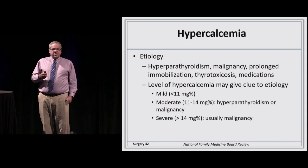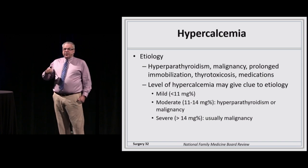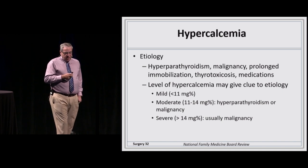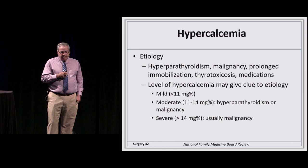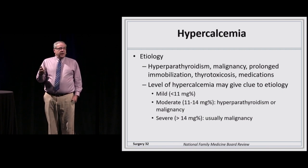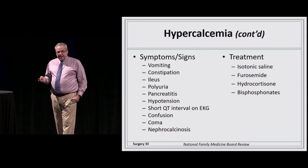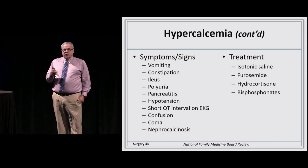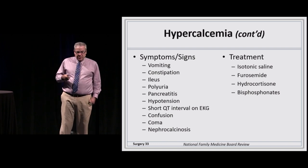Hypercalcemia is usually associated with hyperparathyroidism or malignancy — where malignant cells replace bone marrow cells, driving calcium into the bloodstream. Other causes include prolonged immobilization, thyrotoxicosis, and various medications. Severe hypercalcemia above 14 mg% is almost always malignant; mild hypercalcemia has a variety of causes. Symptoms include vomiting, constipation, ileus, polyuria, and calcium-containing kidney stones. Treat with isotonic saline to wash out calcium, furosemide to increase renal calcium excretion, and long-term treatments like hydrocortisone and bisphosphonates to drive calcium back into bone.